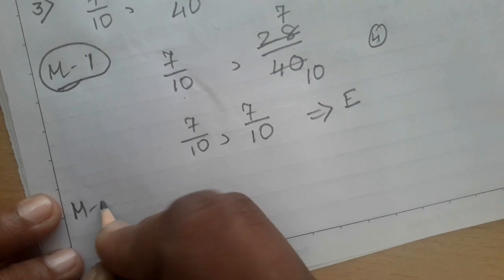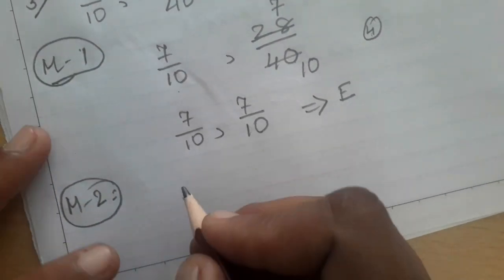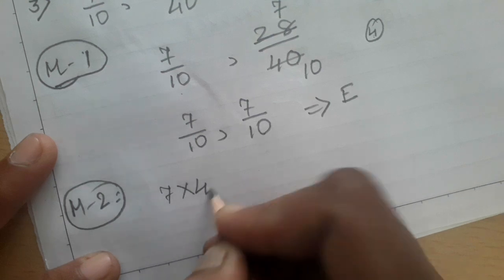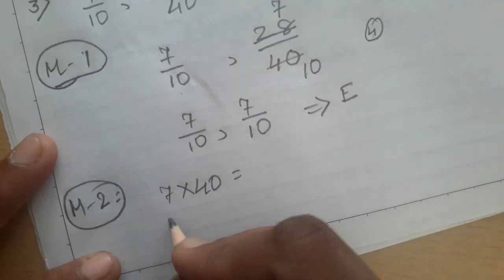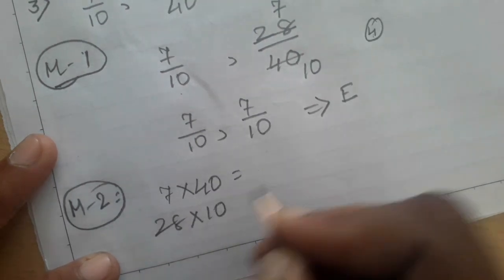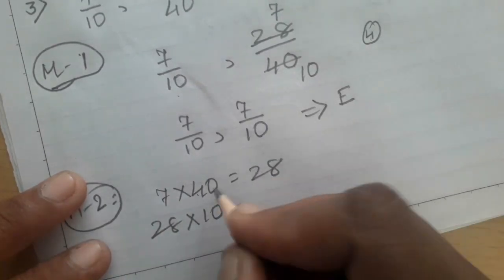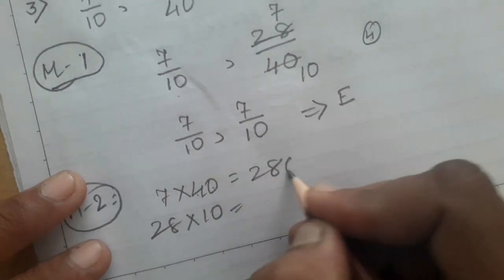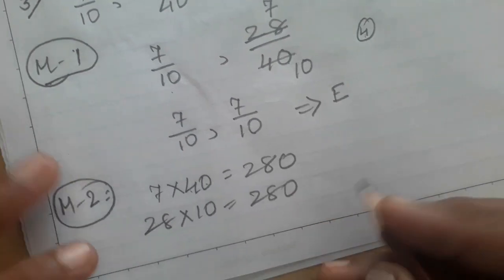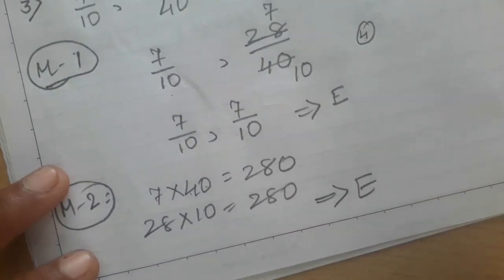Using Method 2 — cross product: 7 × 40 = 280 and 28 × 10 = 280. Both products are equal, so here also you can say that they are equivalent.